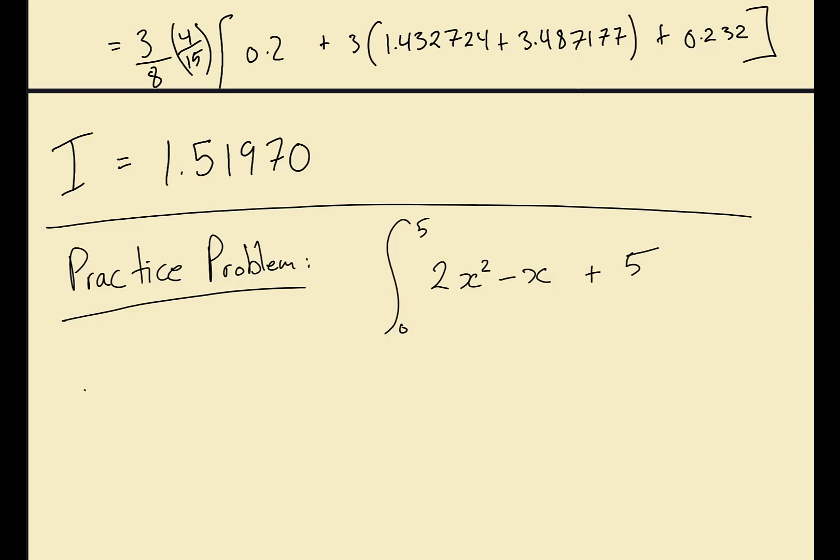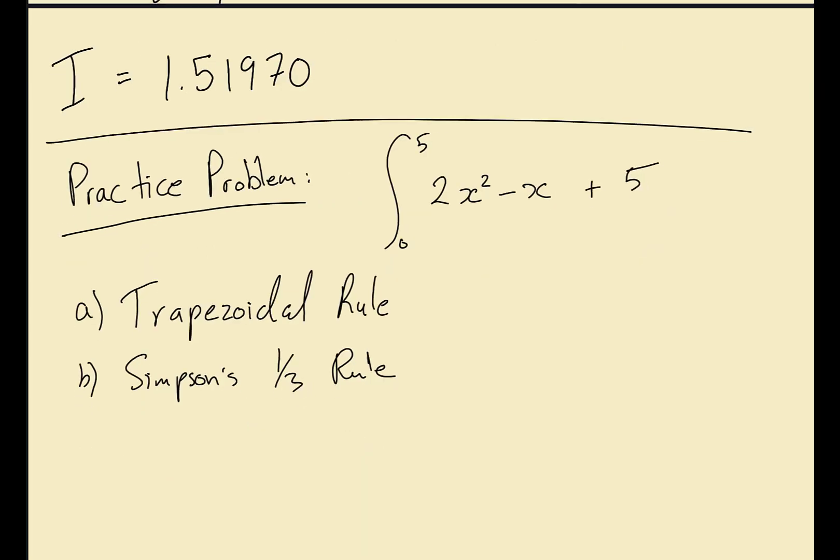And we want you to use trapezoidal rule first for part a, and then use Simpson's one-third for b, and then Simpson's three-eighths for c. And then we want you to also find the estimated error for each method.